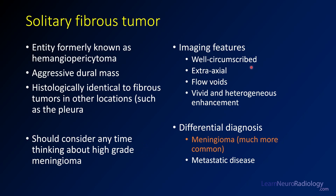These tend to be well-circumscribed and extra-axial. They can have flow voids, and you do see flow voids in this case, which is a nice clue. There tends to be avid and somewhat heterogeneous enhancement.